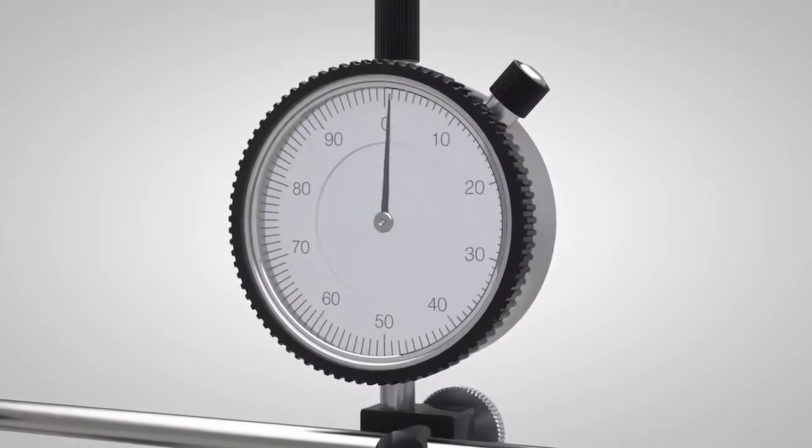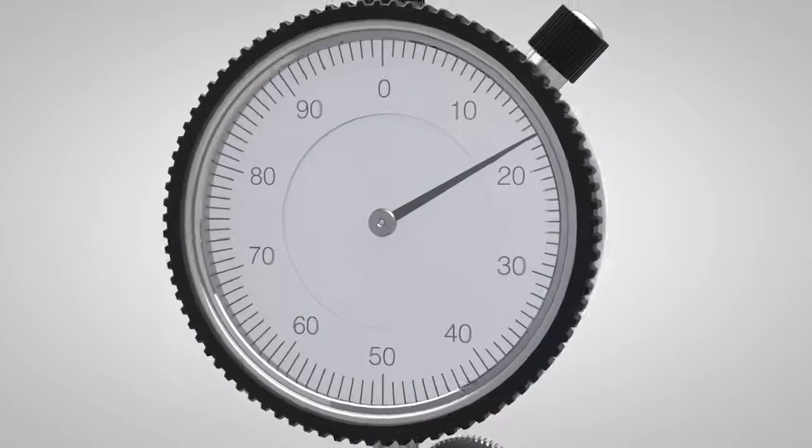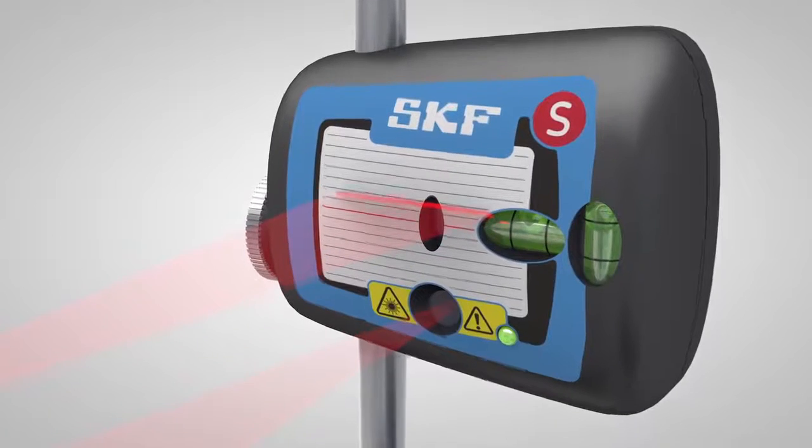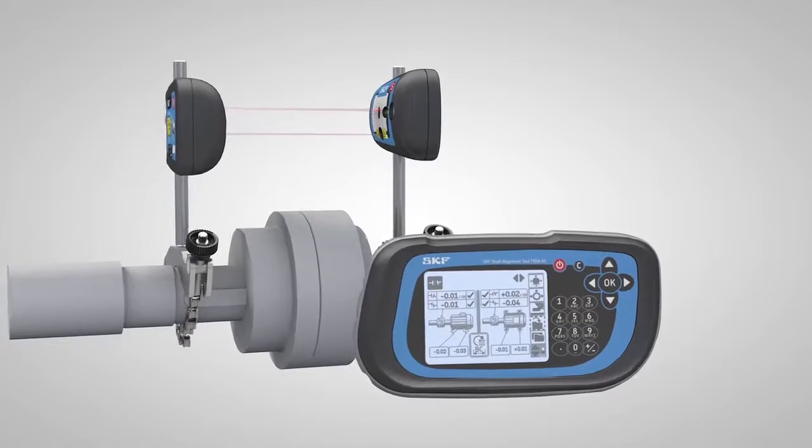Dial gauges, which allow high accuracy but are complicated to use. And laser alignment systems, which are very accurate and easy to use but require a higher investment.